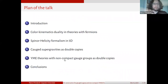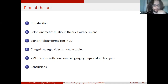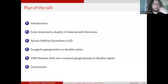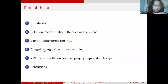Let me start with a plan for the talk. Aside from the introduction, I want to review some of the basic tools which we'll use for the double-copy constructions for the classes of theories we are targeting. There are two main technical tools: color-kinematics duality for theories with massive fermions, and some development about the equivalent of the spinor-helicity formalism in five dimensions. Then in the second part of the talk, I will discuss two classes of theories, namely gauge supergravities and Yang-Mills-Einstein supergravities with non-compact gauge groups, and present an example of each.